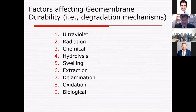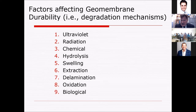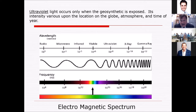Superimposed on this, there are nine factors affecting durability: UV, radiation, chemical, hydrolysis, swelling, extraction, delamination, oxidation, and a biologic concern. UV is especially important if the material is exposed, even temporarily. And certainly the surface area is working against you for other geosynthetics, particularly geotextiles.